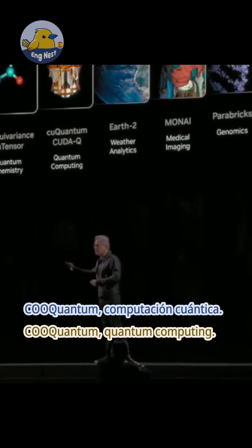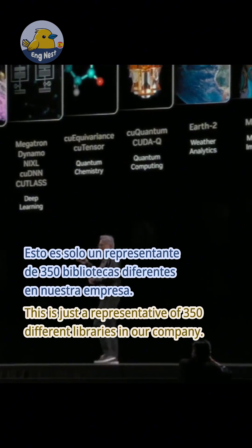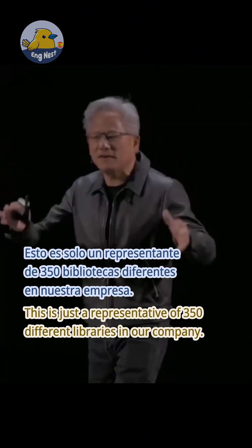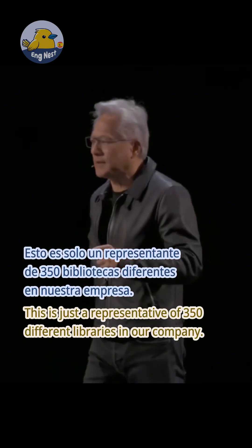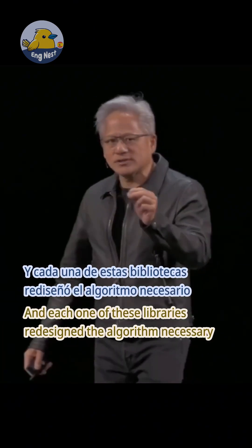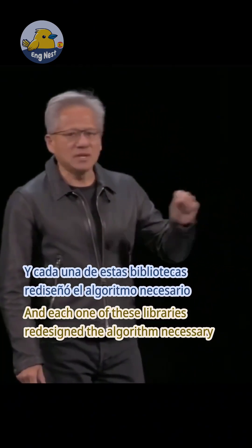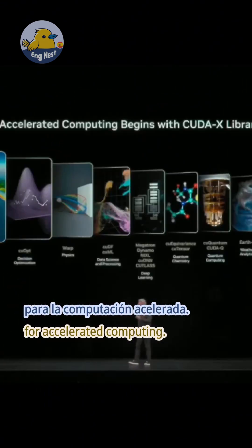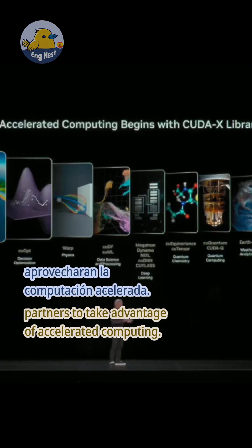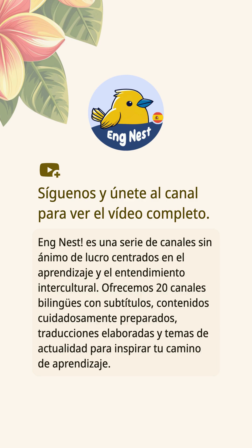And the list goes on — genomics processing, Aerial (pay attention, we're going to do something really important here today), cuQuantum for quantum computing. This is just a representative of 350 different libraries in our company. Each one of these libraries redesigned the algorithm necessary for accelerated computing. Each one of these libraries made it possible for all of the ecosystem partners to take advantage of accelerated computing.